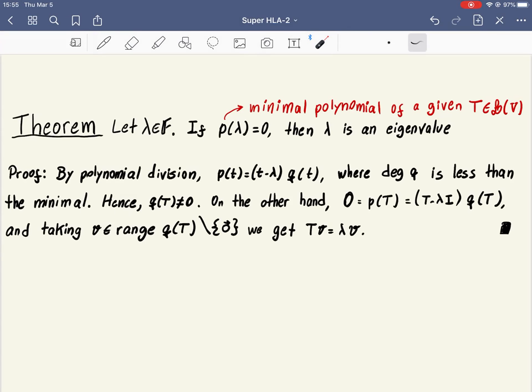The other theorem I'm going to prove is the following: that if lambda is a root of the minimal polynomial of a certain operator T on a certain finite dimensional vector space V, then lambda is an eigenvalue, like a value of T, of course.